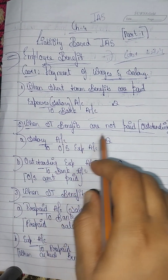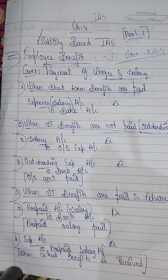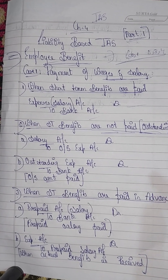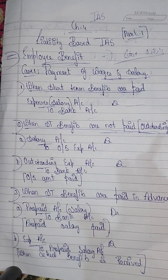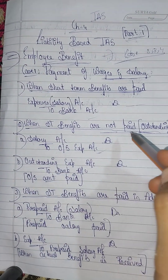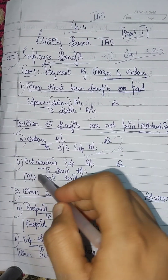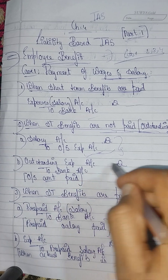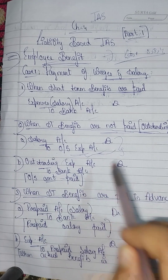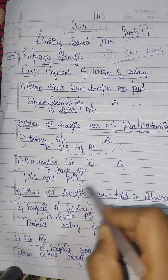Next, when the short-term benefits are not paid or outstanding — expenses are not paid. If you pay the salary, you will pass the second entry: salary account debit to outstanding expenses account. This is the outstanding amount. If you pay the outstanding amount, you will pay from bank account. Outstanding expenses are not paid.